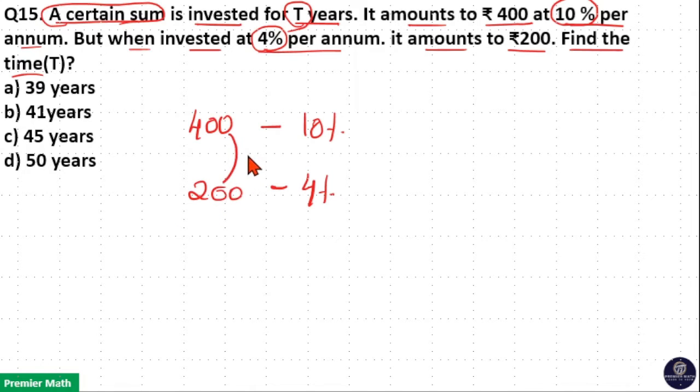Now, this difference in amount is equal to the interest here. That is, 400 minus 200 is 200, and 10% minus 4% is 6%. That is, 6% interest is Rs. 200 here.